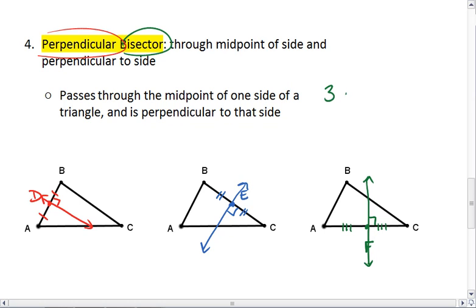We have three perpendicular bisectors in a triangle.